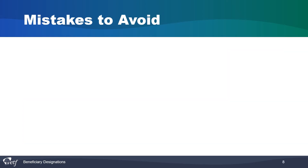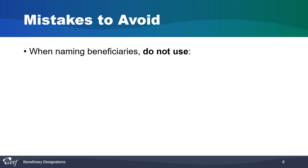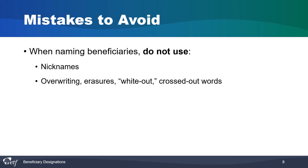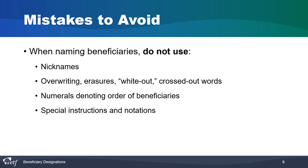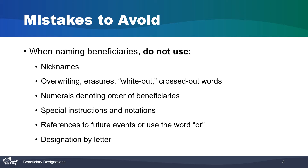Because the beneficiary designation form is a legally binding document, there are some mistakes to avoid. If you make any of these mistakes, your form will be rejected and you will have to complete a new one. When naming beneficiaries, do not use nicknames — write out the full first and last name of each beneficiary. Avoid strikeouts, whiteouts, and erasures. Do not use numerals denoting order of beneficiaries; order is determined based on what section they are listed in — primary or secondary. Do not use special instructions, notations, or references to future events, or use the word OR. Do not designate a beneficiary by letter — only the beneficiary form is legally binding.